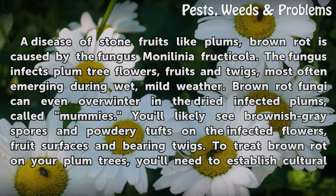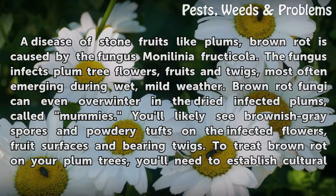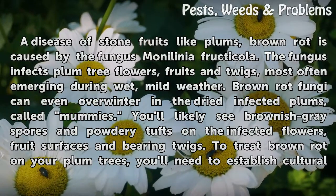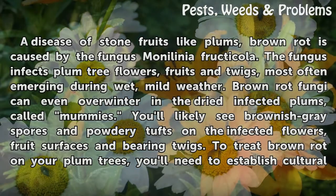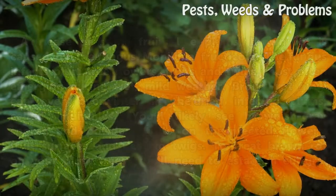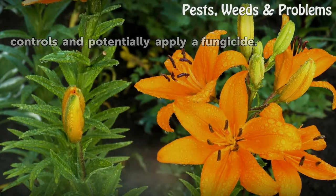Brown rot fungi can even overwinter in the dried infected plums, called mummies. You'll likely see brownish-gray spores and powdery tufts on the infected flowers, fruit surfaces and bearing twigs. To treat brown rot on your plum trees, you'll need to establish cultural controls and potentially apply a fungicide.